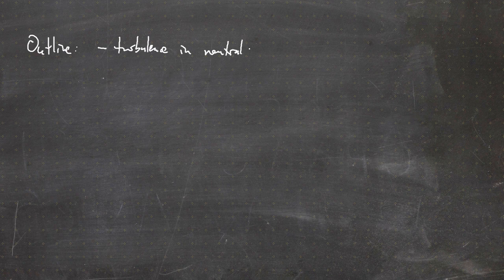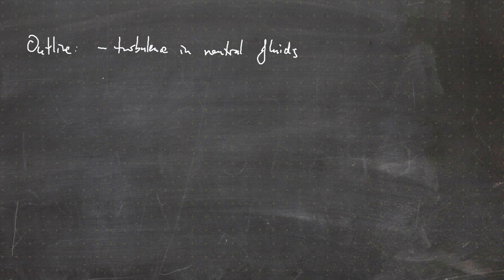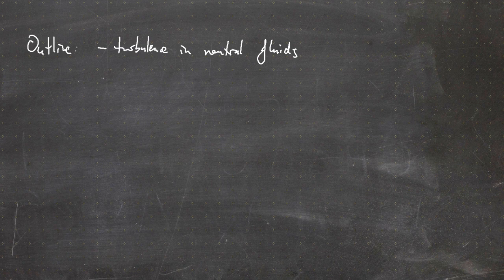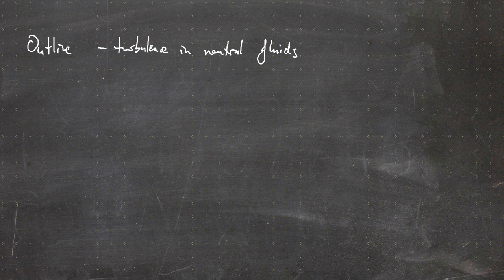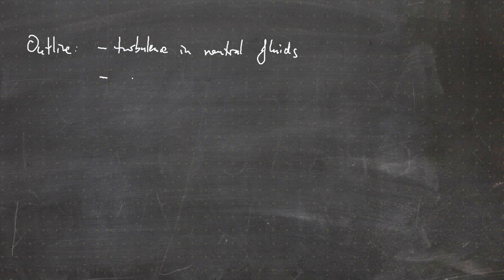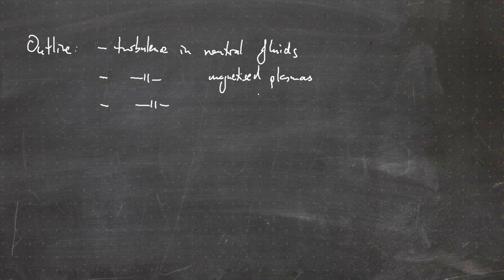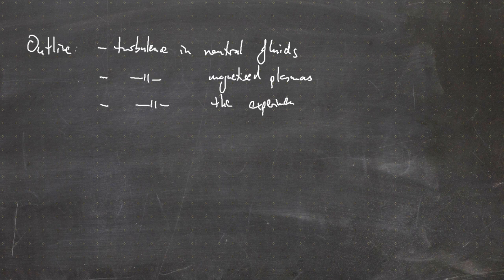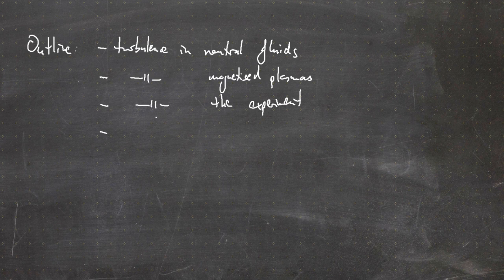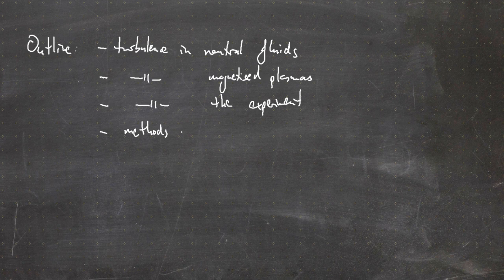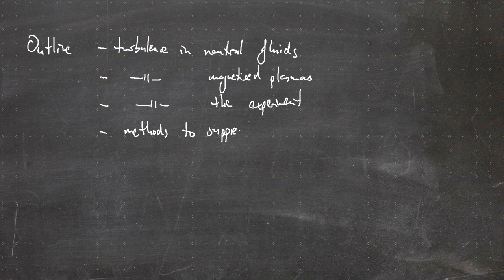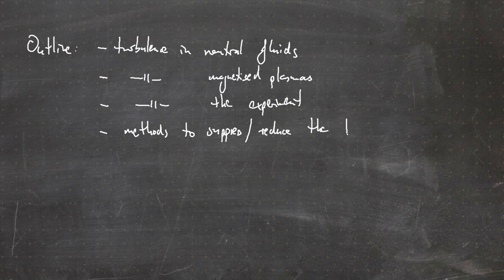As for the outline of this chapter, we will first talk about turbulence in neutral fluids, then we talk about turbulence in magnetized plasmas, then about turbulence observed in the experiment, and finally methods to suppress or reduce the turbulence.